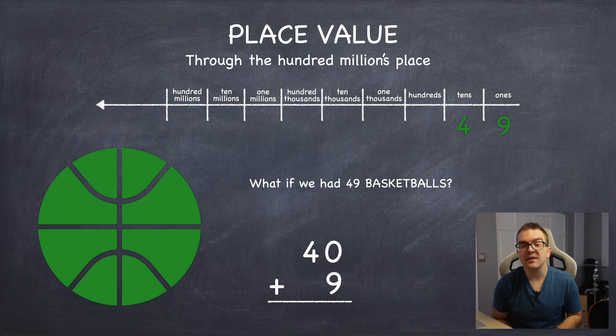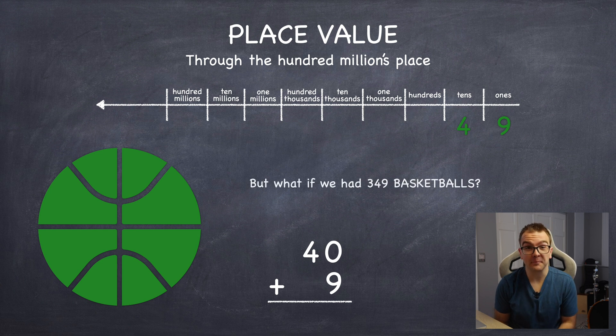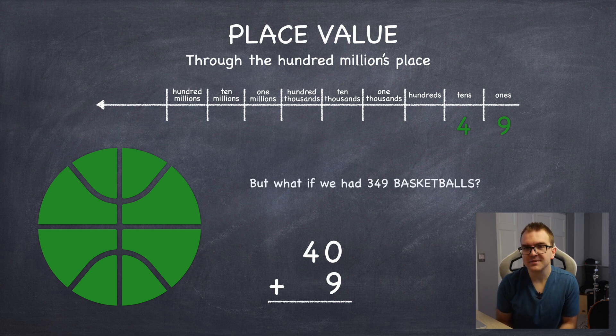Now, with big numbers, we can already tell where to place the start of the number by how it's called out. For example, 349. See how I said 300? So, three goes in the hundreds place, followed by four, and then nine.